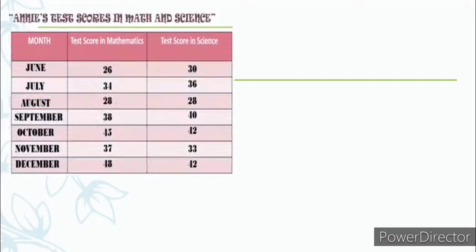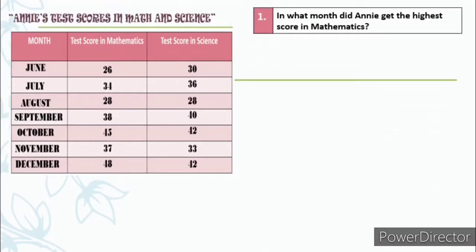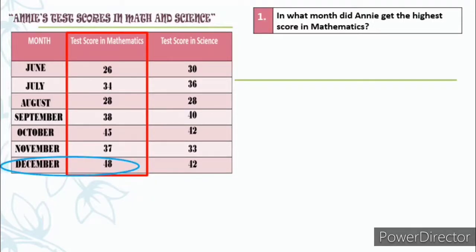Since we have now presented Annie's test scores in mathematics and science in tabular form, we will answer the questions. Number 1: In what month did Annie get the highest score in mathematics? Let us observe the test scores in mathematics. The question asks for the highest score. Very good — it's December. She got 48 points.